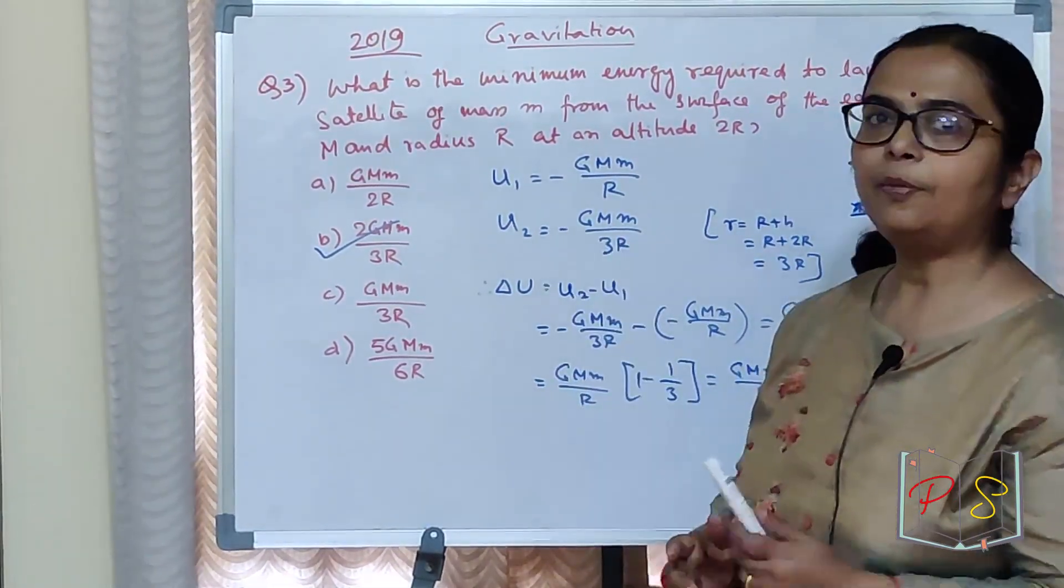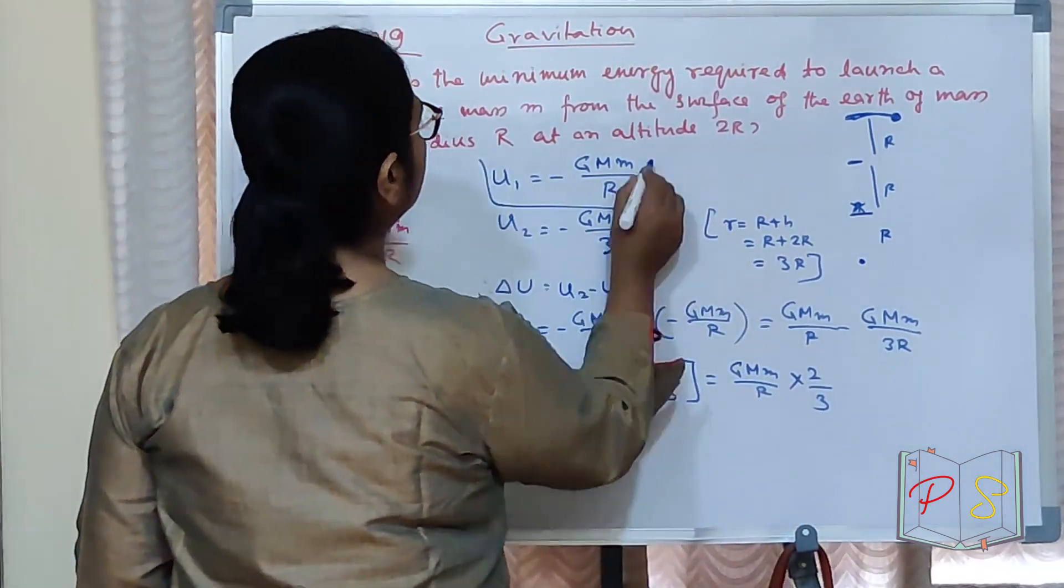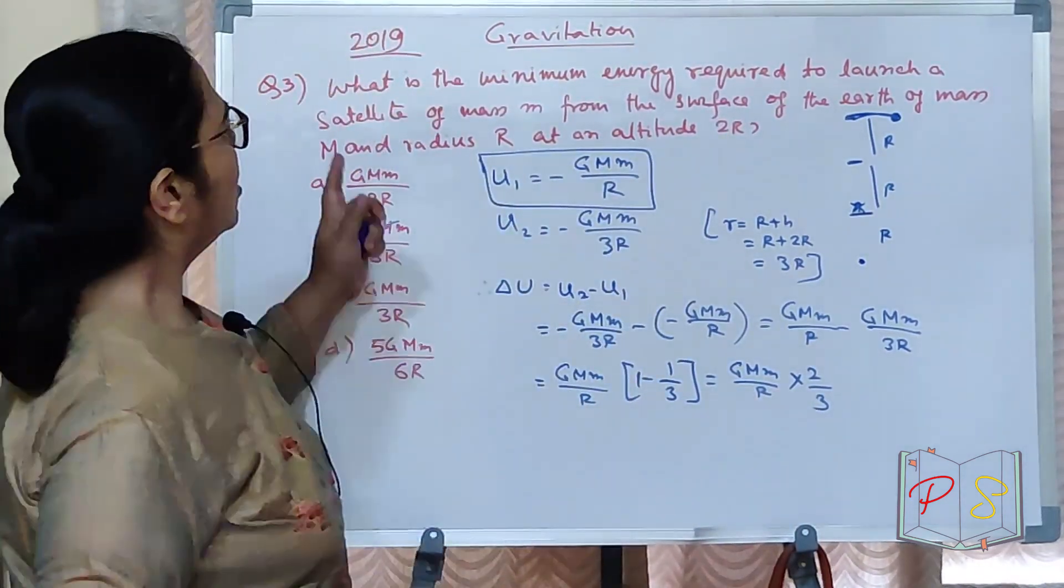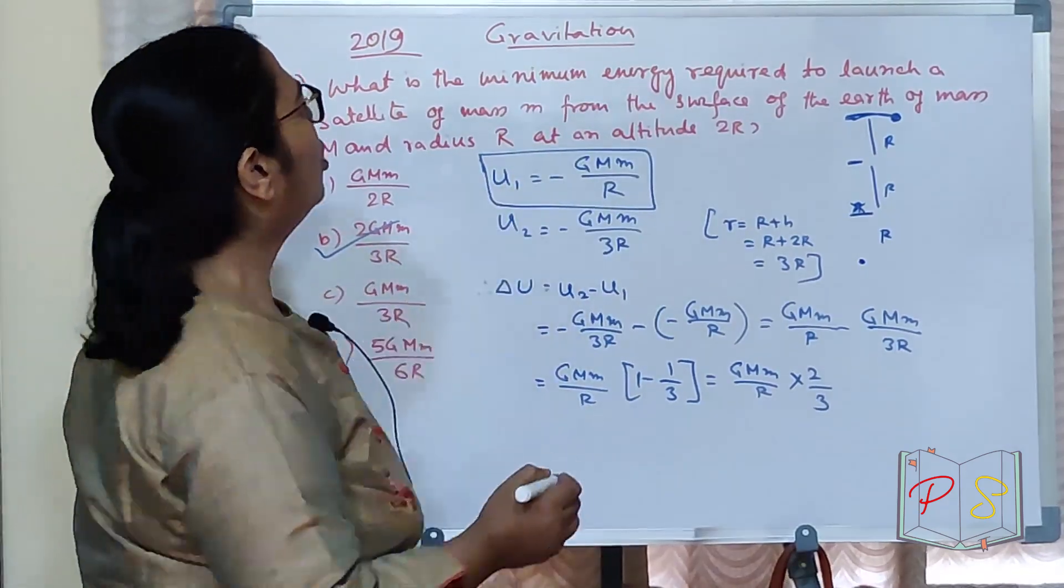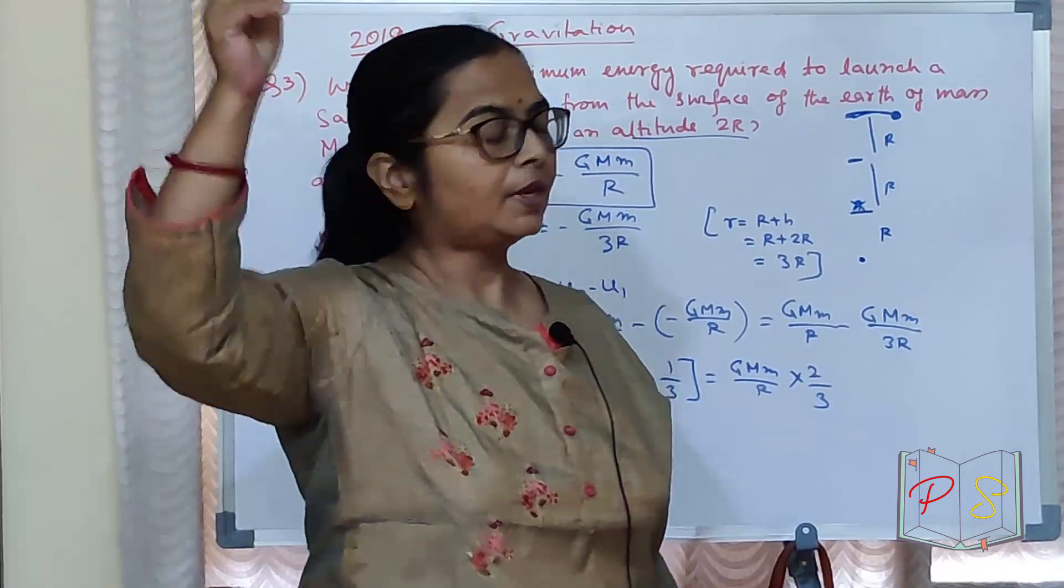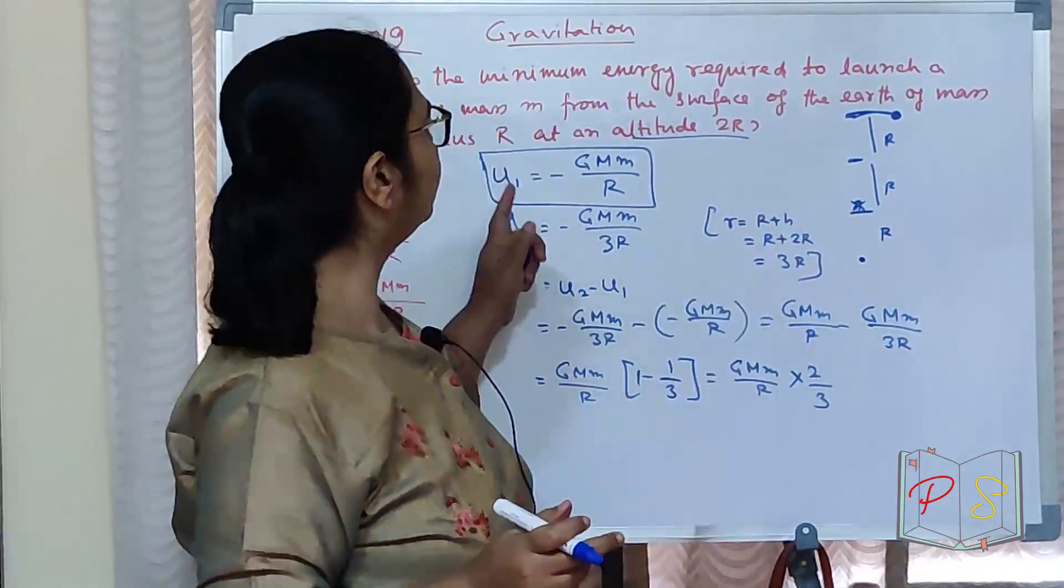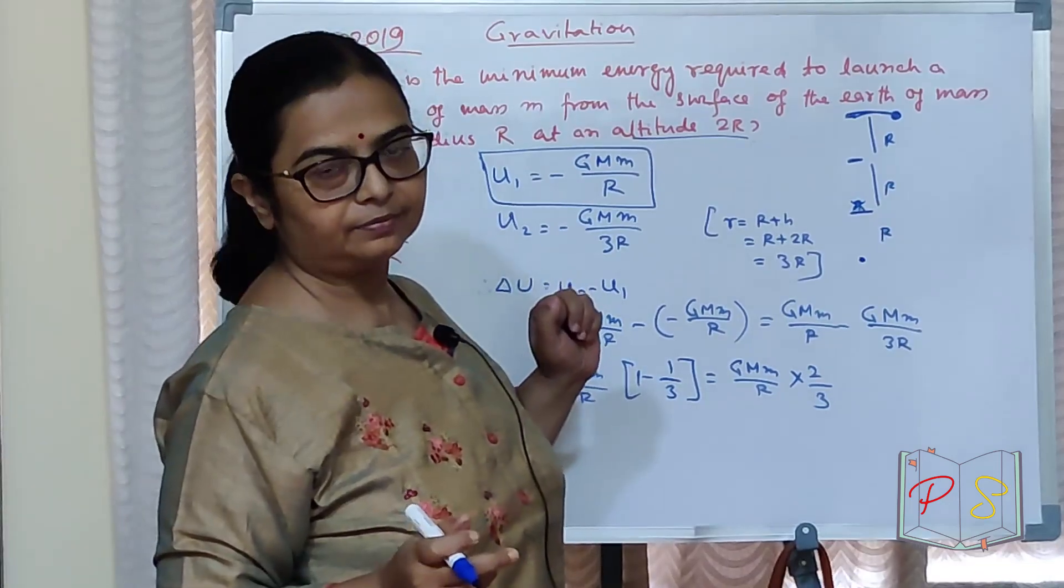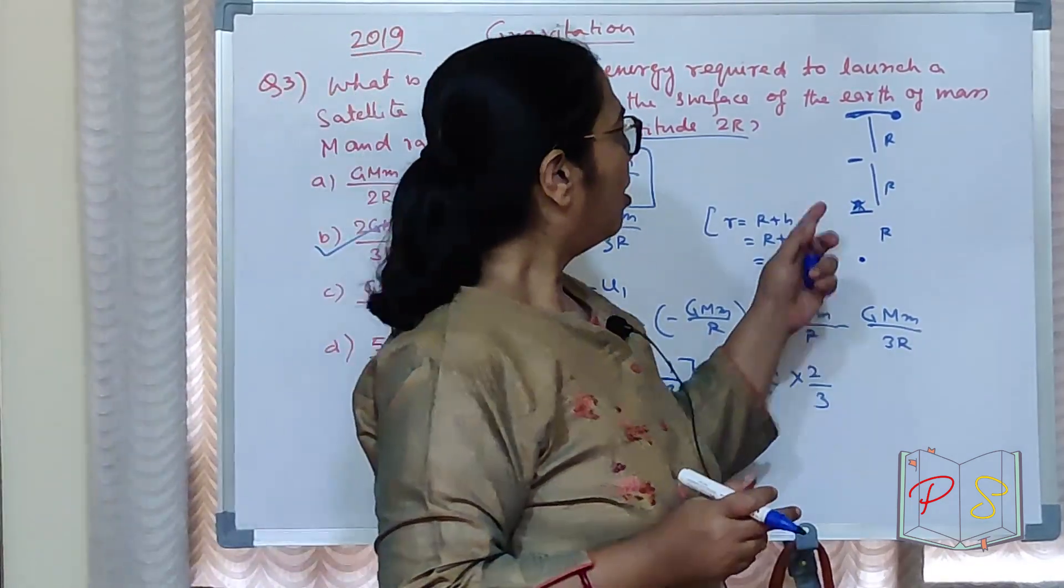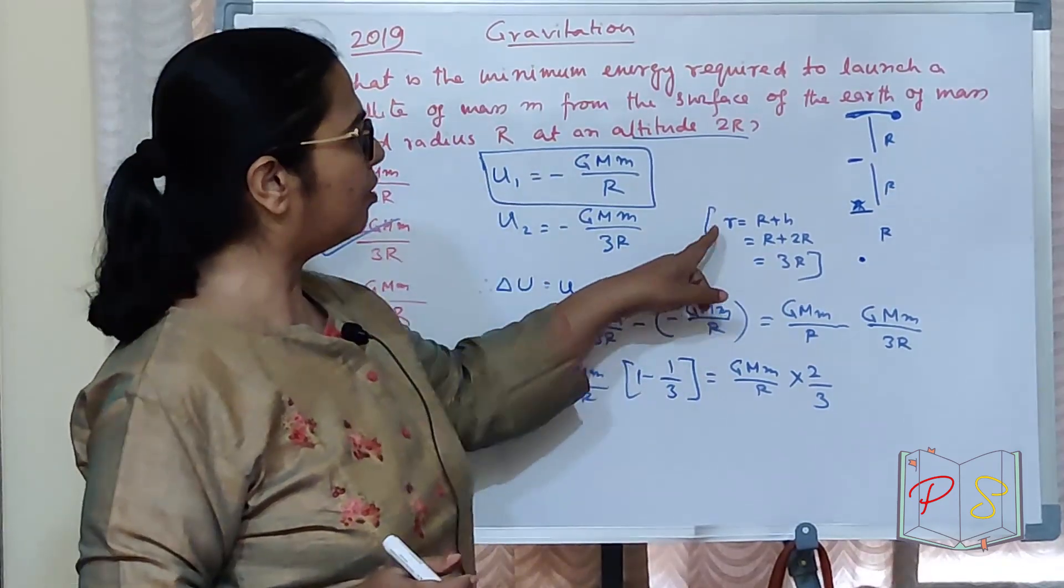It's easy. You need to remember the potential energy formula. You need to understand the question. Altitude 2R means height 2R. Already R hai, on the surface energy is minus GMm by R.